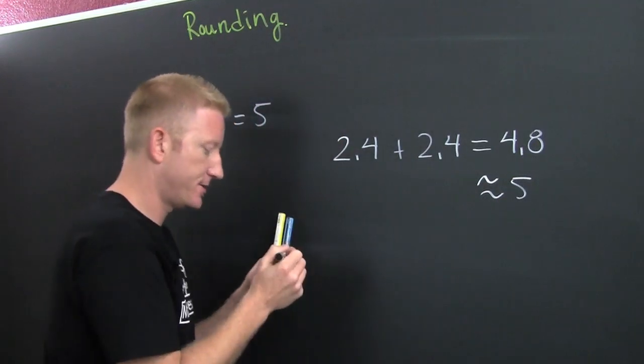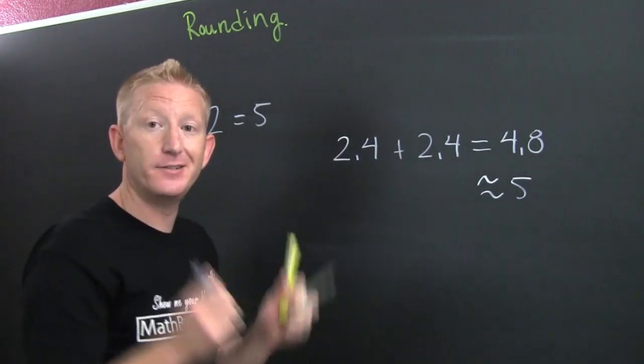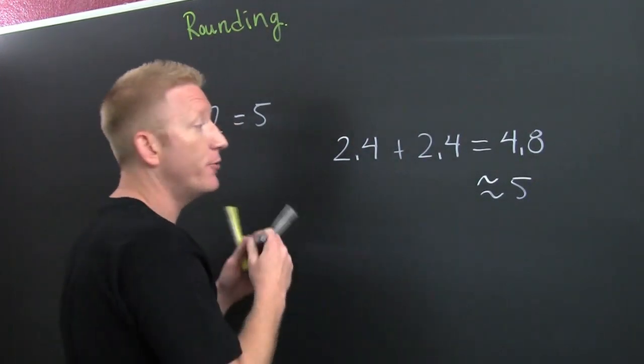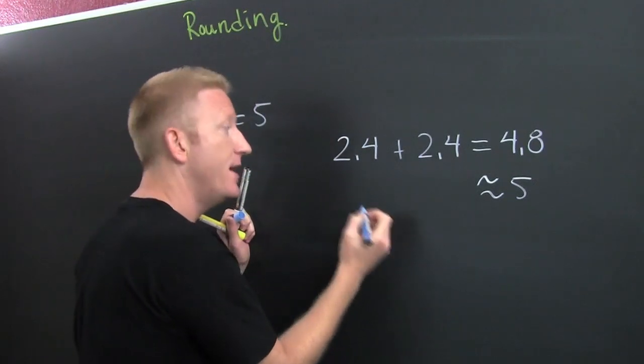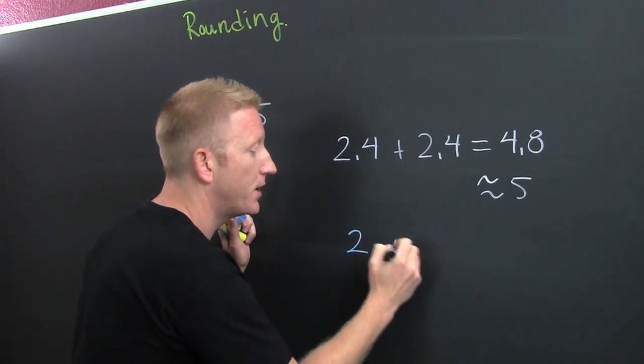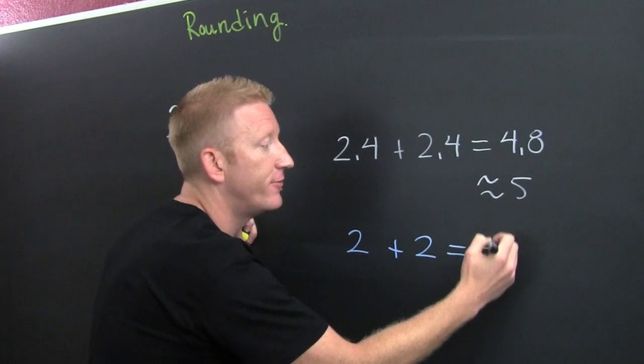Now picture this. What if we had rounded before? Before we had performed our computation, if we had rounded before, where does 2.4 go? So 2.4 goes to 2 plus 2. And then what would you get? You would get 4.